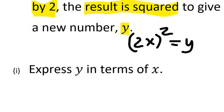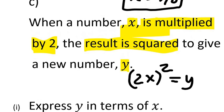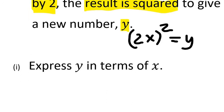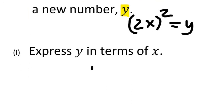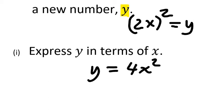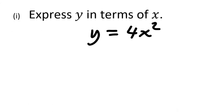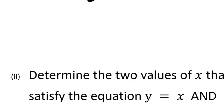Looking at the first instruction, express y in terms of x. We have y equals 2x to be squared, and of course 2x squared would be 4x squared, because 2x times 2x is 4x squared. So we have y as the subject — y equals 4x squared. That's what expressing y in terms of x means.